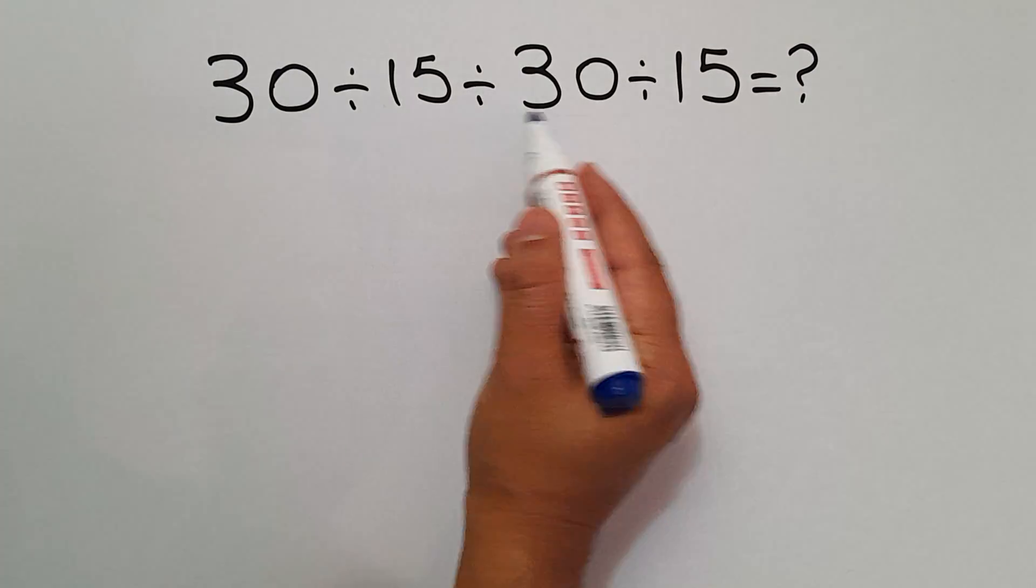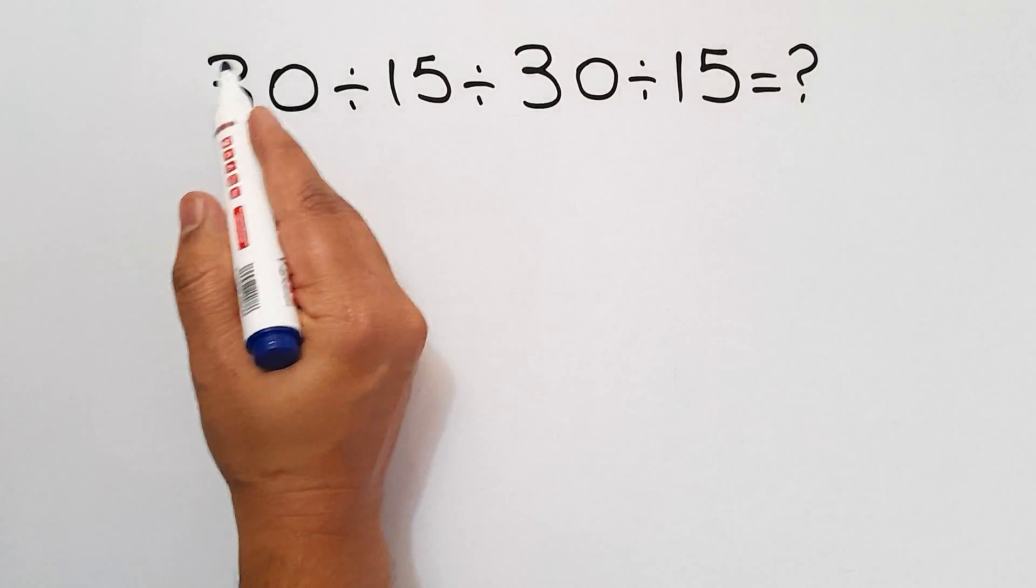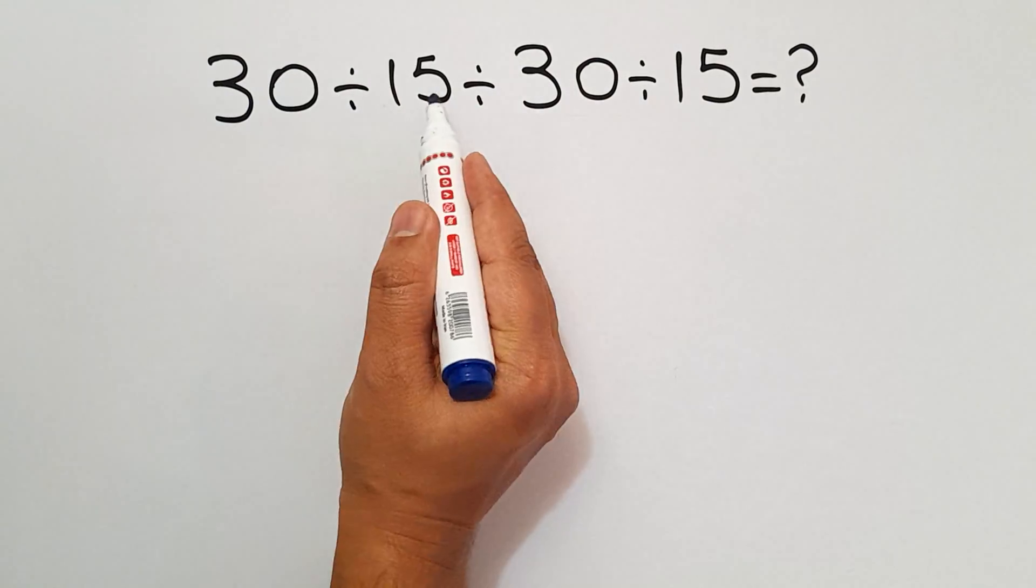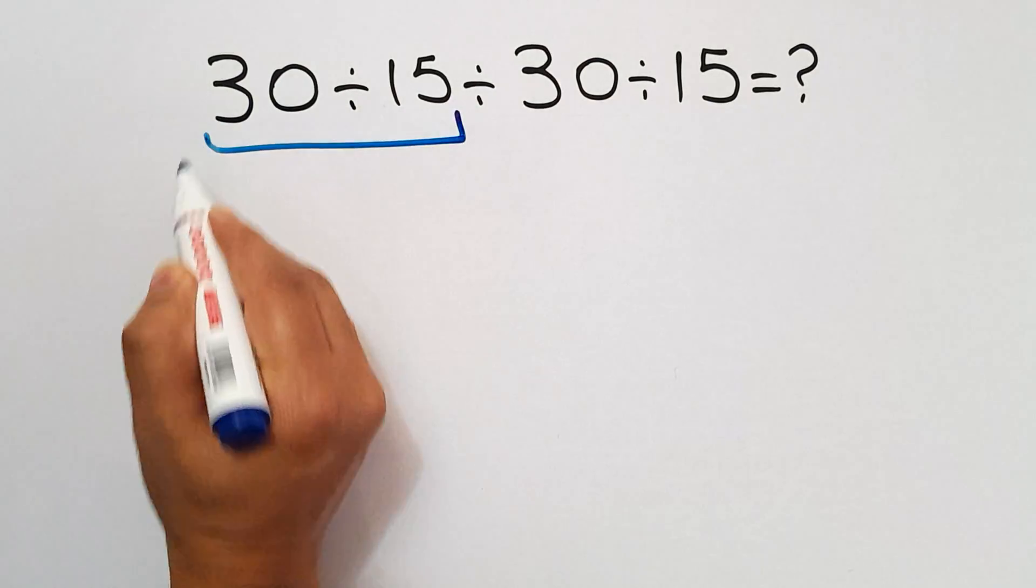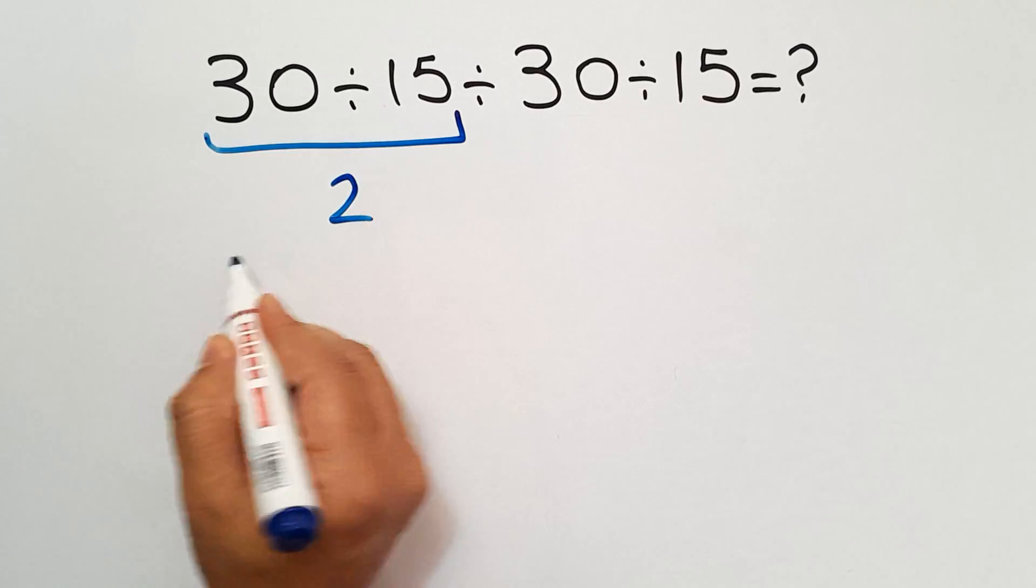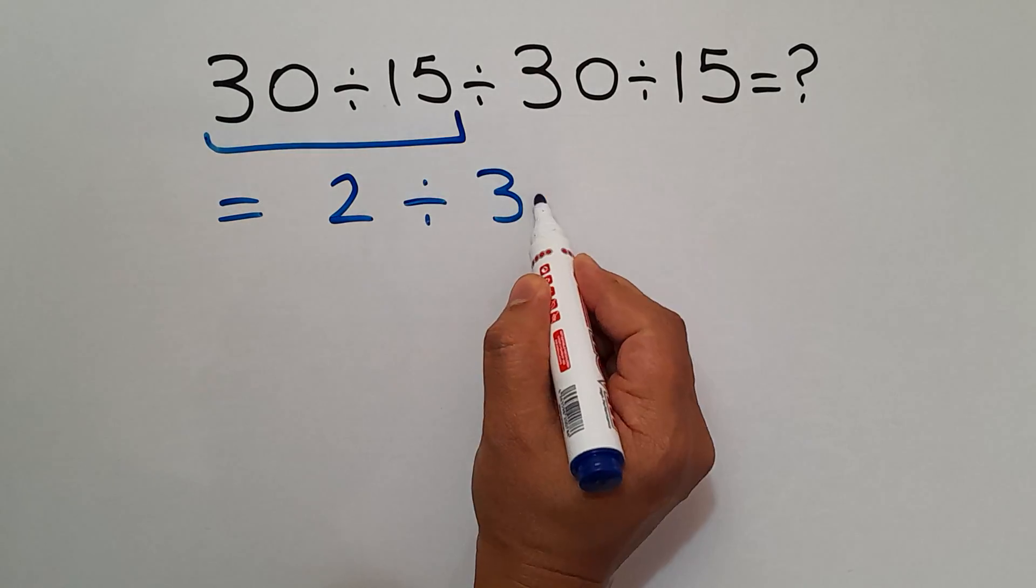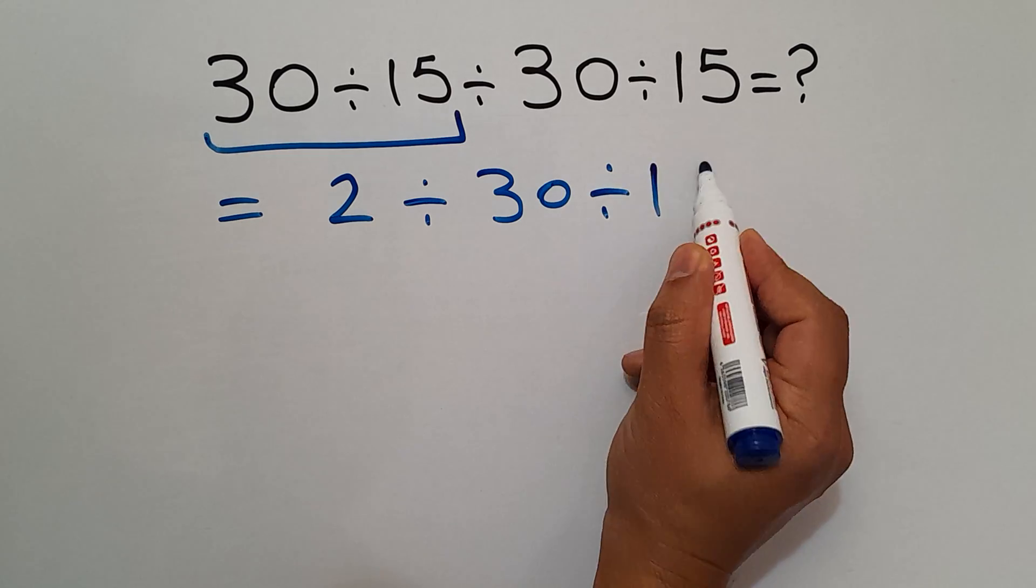In this expression we have three divisions and we have to work from left to right. So first, 30 divided by 15 which equals 2. So we have 2 divided by 30 divided by 15.